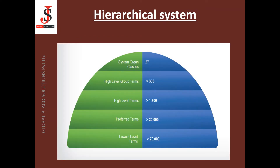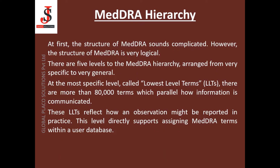This is the hierarchy of MedDRA. At the bottom we have LLT, above that we have Preferred Terms, above that we have HLT (High Level Terms), above that we have HLGT, and above that we have System Organ Classes. The MedDRA hierarchy explanation in detail: at first, the structure of MedDRA sounds complicated; however, it is very logical. There are five levels to the MedDRA hierarchy arranged from very specific to very general. At the most specific level — the Lowest Level Terms — there are more than 80,000 terms which parallel how information is communicated.